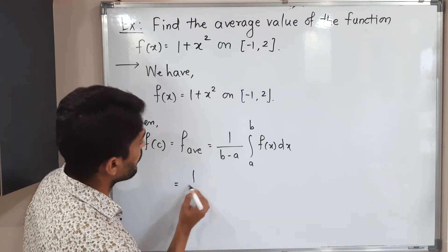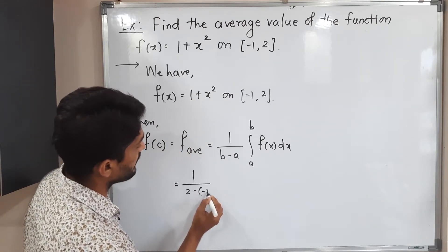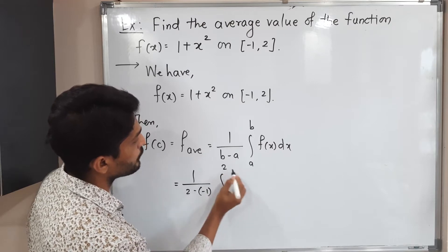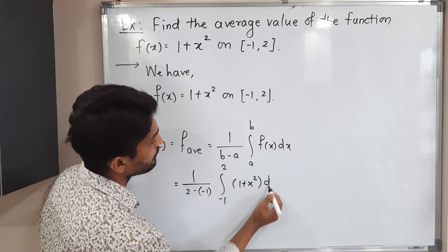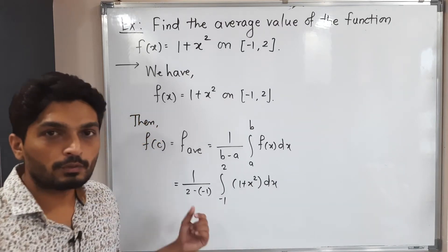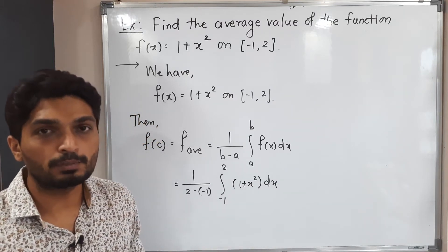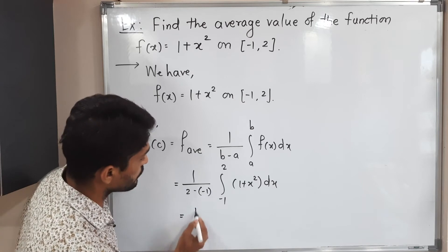So this is equal to 1 upon 2 minus minus 1, limits minus 1 to 2. Our function is 1 plus x square dx. So here what we'll have, minus minus plus, 2 plus 1, 3. So this is 1 by 3.